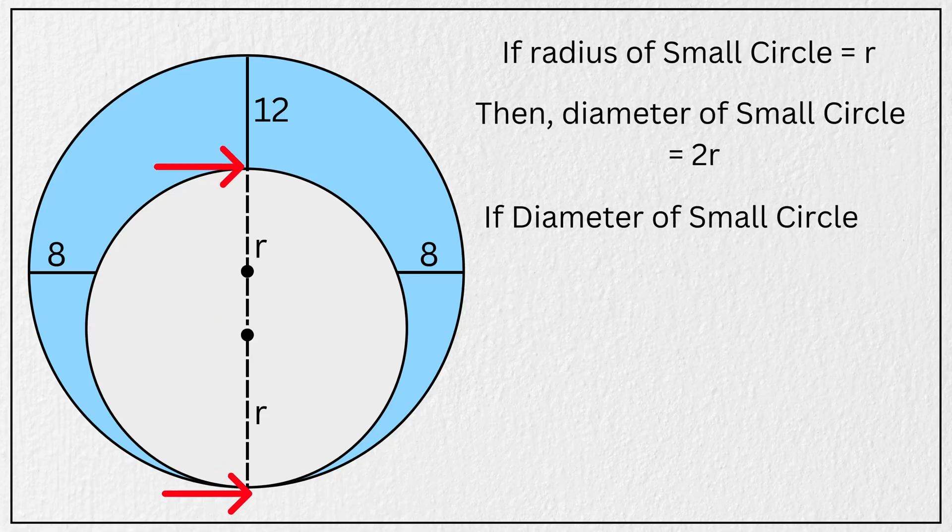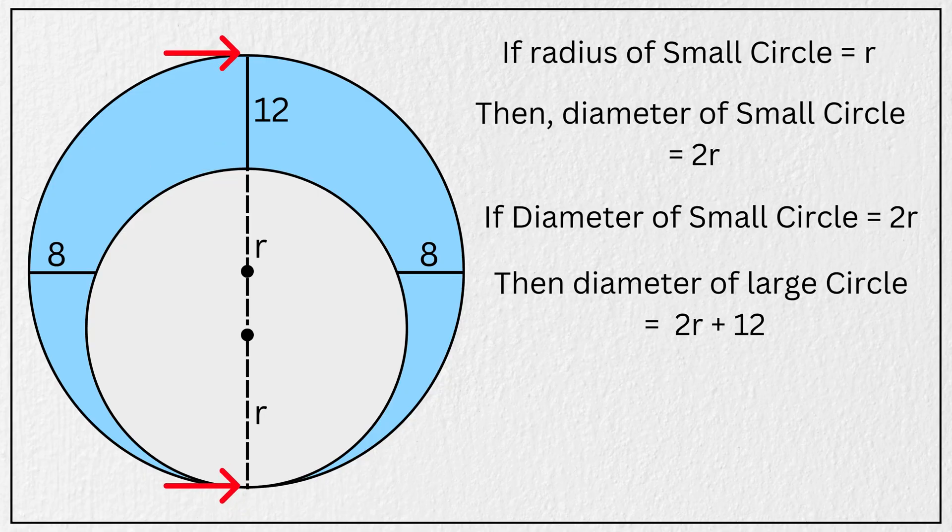And if the diameter of the smaller circle is 2 times r, then the diameter of the larger circle will be 2r plus 12, as this outer circle extends 12 units further from the inner one. That means the radius of the large circle will be 2r plus 12, all divided by 2, which simplifies to r plus 6.